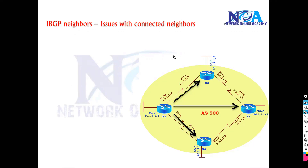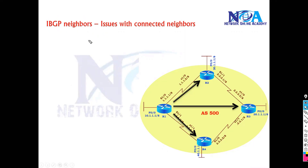We'll see how to configure iBGP neighbors using loopback interfaces. Most of the time you prefer to use loopbacks because neighbors with loopbacks provide a redundancy option. Before we go ahead with iBGP with loopbacks, let's first look at what the problem is — what is the issue with connected neighbors?